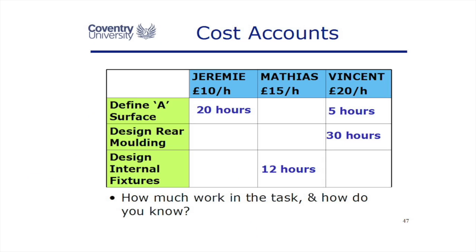Jeremy is saying he needs 20 hours for his part of the A surface definition. Whenever we ask for an estimate, we have to say: how do you know? Engineers will give you a number rather than say 'I don't know.' The good engineers will say 'I don't know.' The bad engineers will go, 'I think it's 20 hours.'